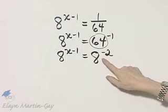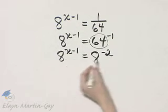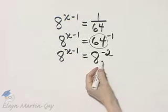But 8 to the negative 2 power is 1 over 64. Now that the bases are the same, what happens is the following.